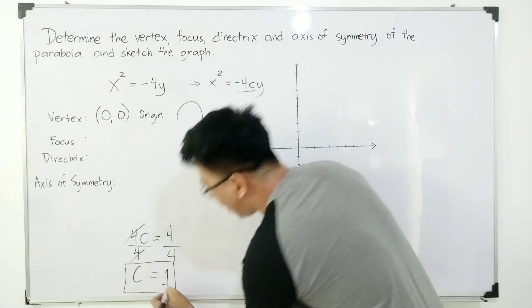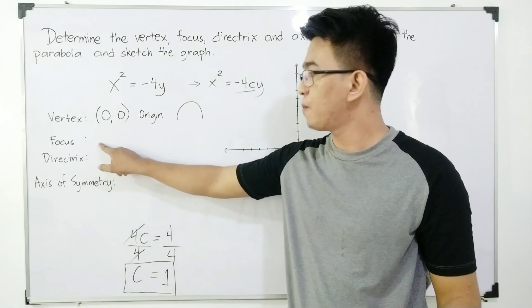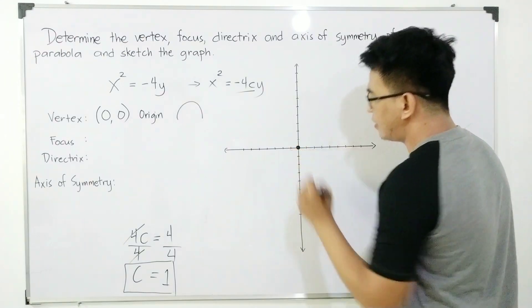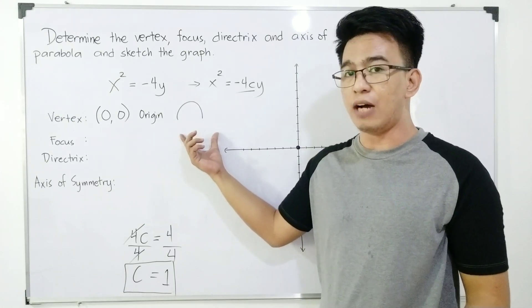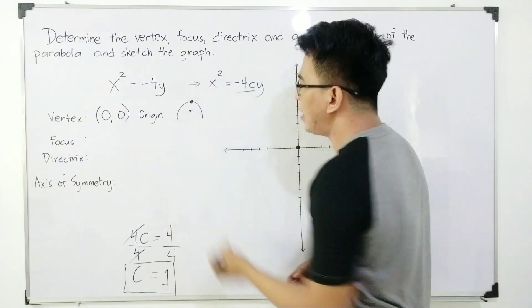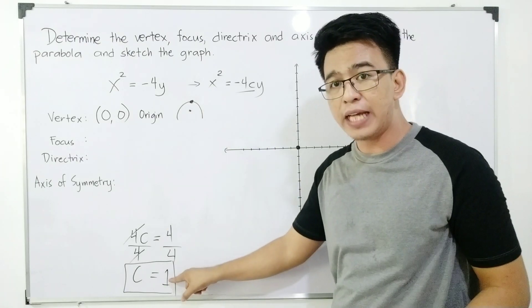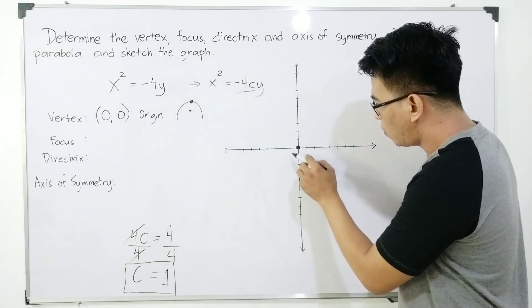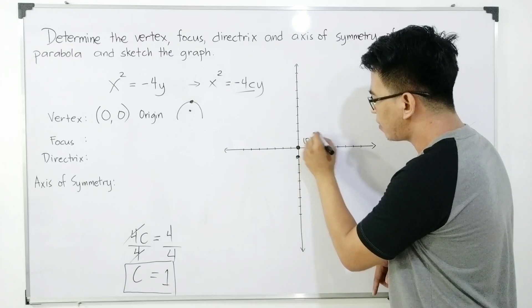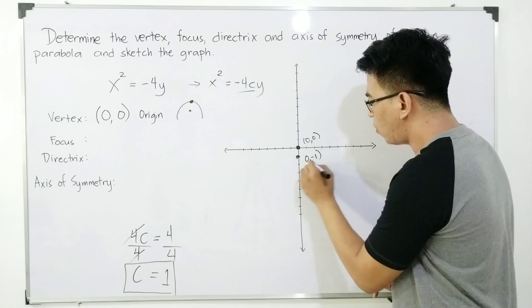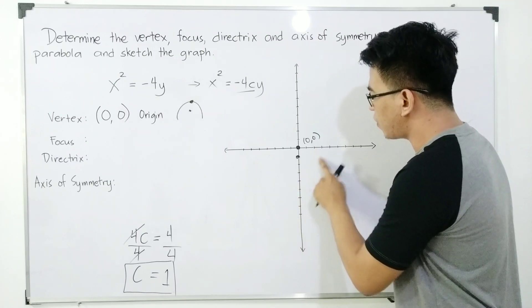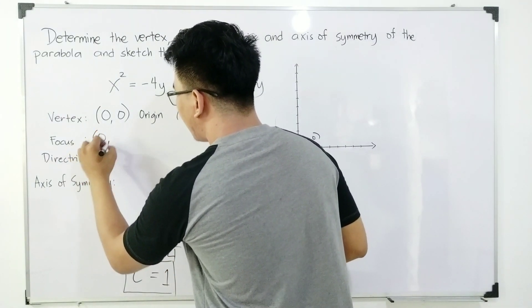The purpose of c is to find the focus. Imagine the vertex is at (0, 0). Since our orientation is downward, the focus is inside the parabola. From the vertex, we move 1 unit downward. So the coordinates of our focus are (0, negative 1).